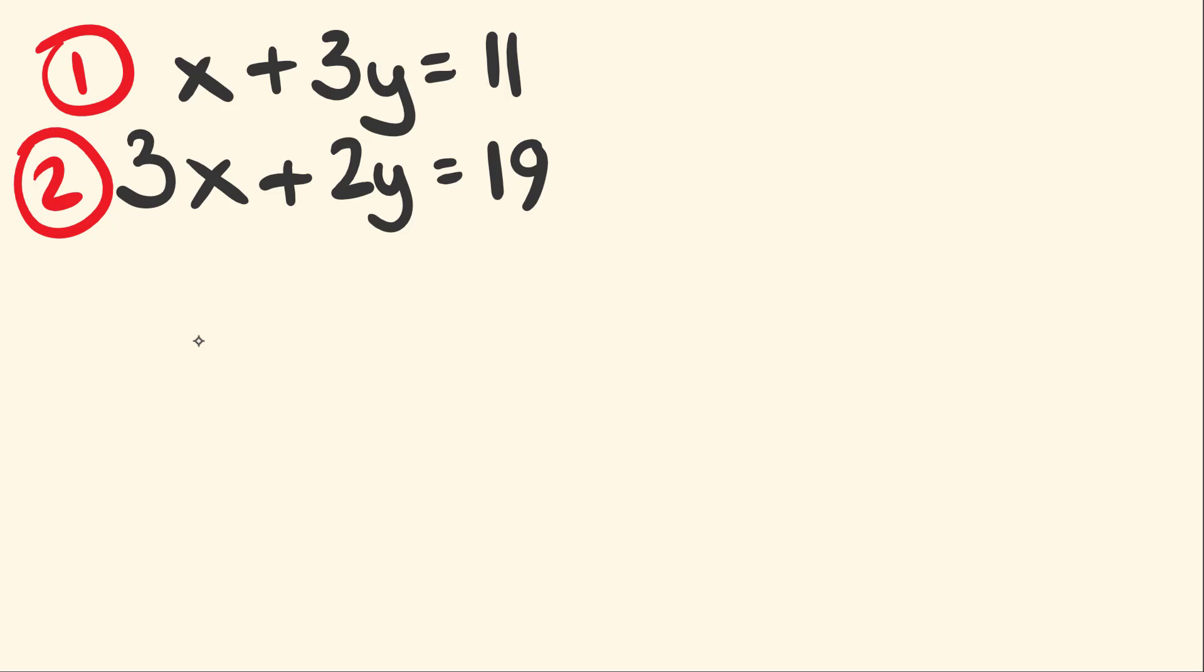So as you can see here, we have the variable x. It has the coefficient of 1 here. You can't see that, but that's what that means. 1 and it has 3. They don't match. And for y, the variable y, we have 3y and 2y. They don't match.